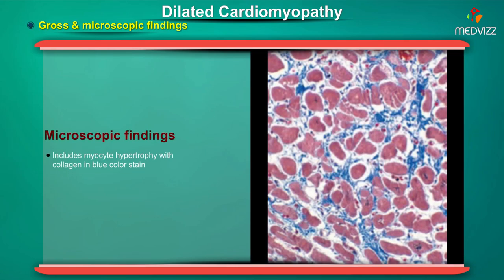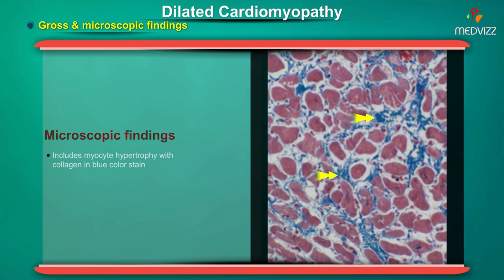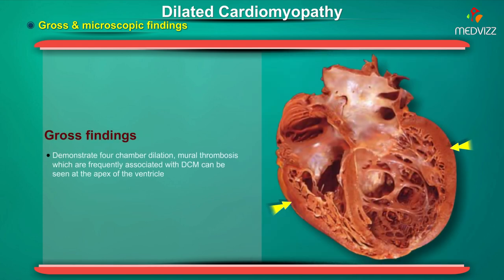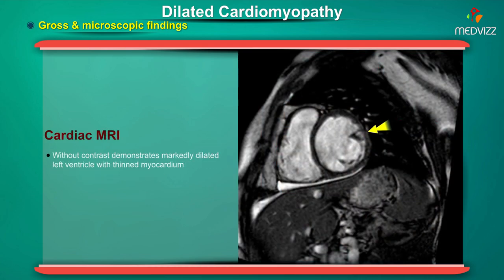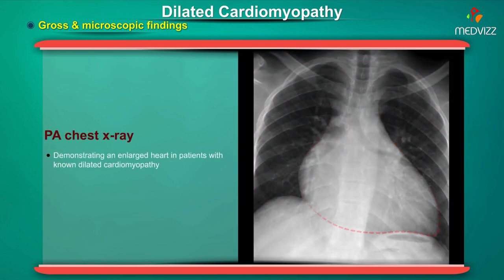Microscopic findings of dilated cardiomyopathy include myocyte hypertrophy with collagen visible in blue color on staining. Gross findings demonstrate four-chamber dilation along with mural thrombosis, frequently associated with dilated cardiomyopathy, which can be seen at the apex of the ventricle. Cardiac MRI without contrast demonstrates a markedly dilated left ventricle with thin myocardium. A posteroanterior view of the chest x-ray demonstrates an enlarged heart in patients with known dilated cardiomyopathy.